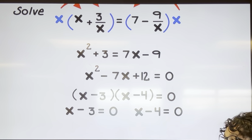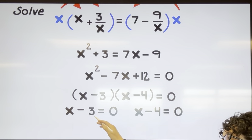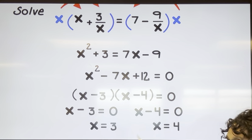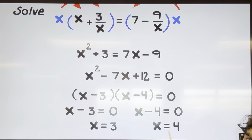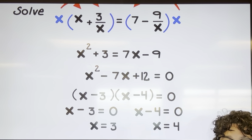Using the zero product property — if two things multiply together to get zero, then one of them is going to be zero. So let's set each factor equal to zero and solve: add three, add four, and I get X equals three and X equals four. These are my final answers.